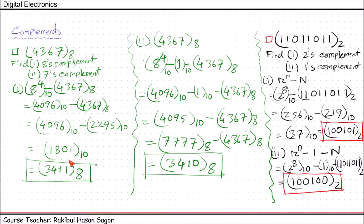Now if you observe the results, when we have R's complement, the R minus 1's complement can be found by subtracting 1 from the R's complement value. Conversely, if we know the value of R minus 1's complement, we simply add 1 to get the R's complement. This relationship holds for all number systems.